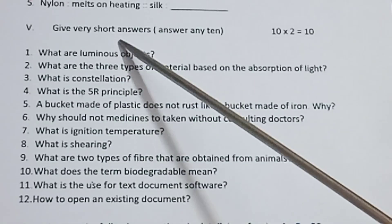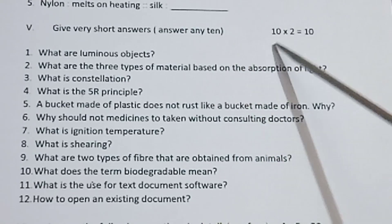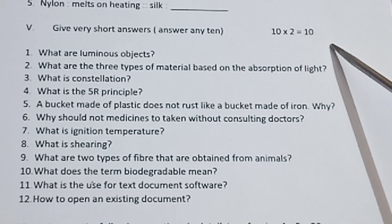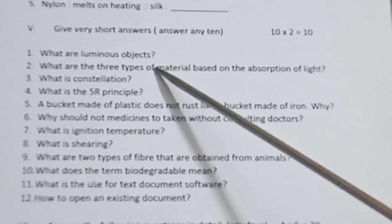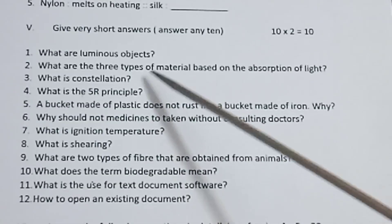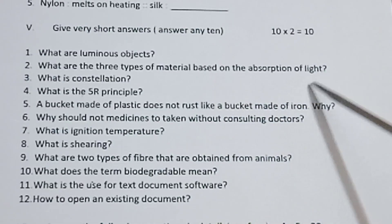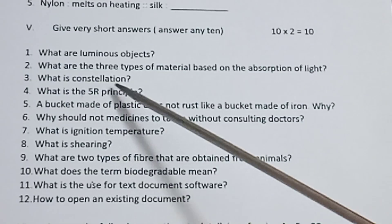Roman numeral 5, give very short answers. Answer any 10. 10 into 2 is equal to 10. First one, what are luminous objects? What are the three types of material based on the absorption of light? Third one, what is constellation?